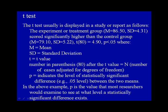scored significantly higher than the control group, M equals 79.10, SD equals 5.22, t parenthesis 80 equals 4.90, p is less than 0.05,